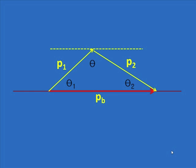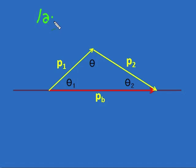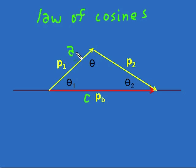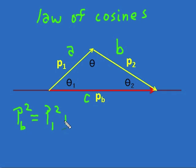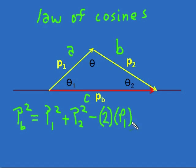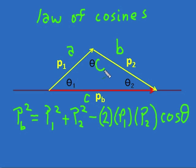Now let's apply the law of cosines to this diagram. We'll call the sides a, b, and c. Therefore we write: pb squared — that's the momentum before, side c — equals p1 squared plus p2 squared minus 2 times p1 times p2 times cos theta. This is very useful for solving for unknowns in a momentum diagram like this.